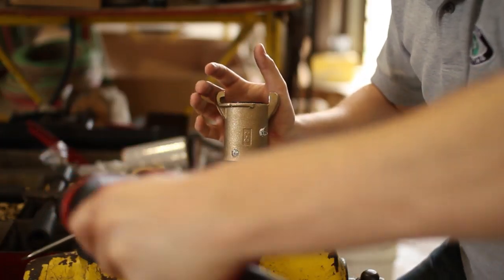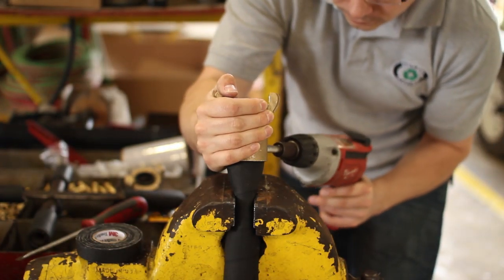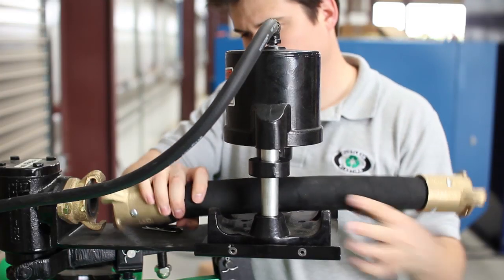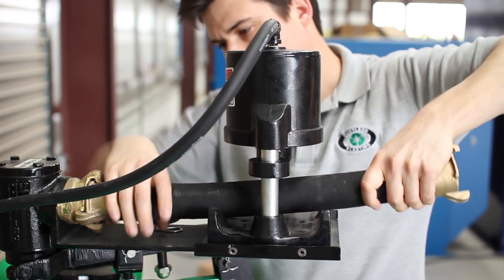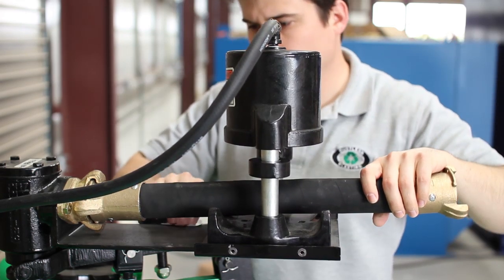Repeat this process on the other side of the hose to attach the other coupling. Now you can put the hose back on the machine, recouple it, and replace the safety pin.